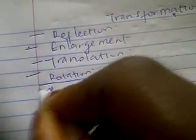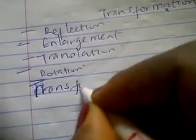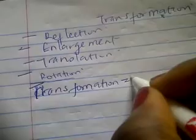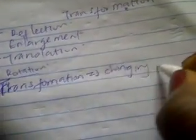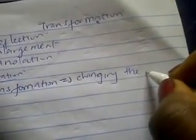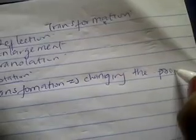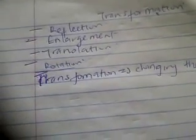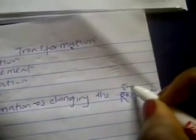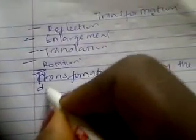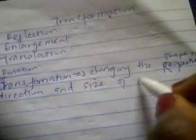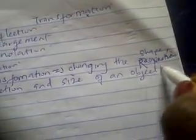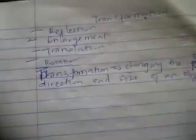Transformation means changing the properties of an object — changing the shape, direction, and size. Now let's move on to reflection.